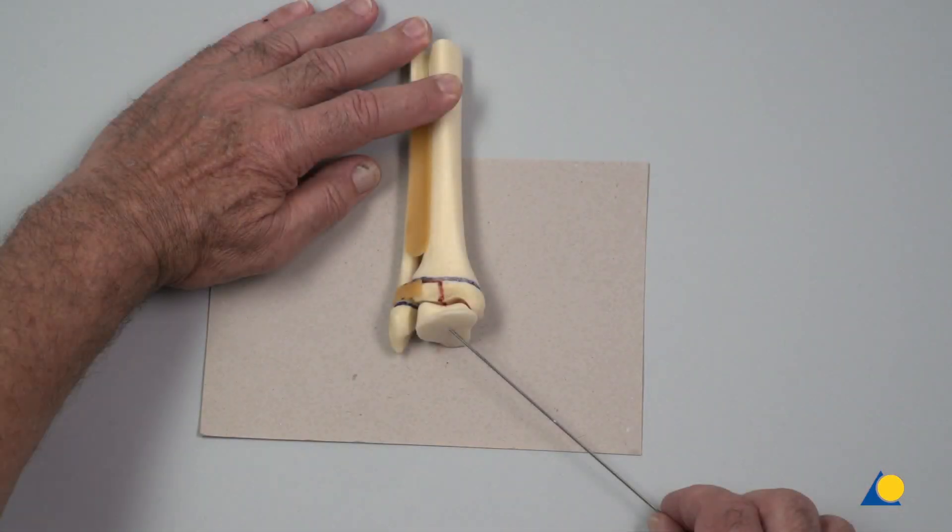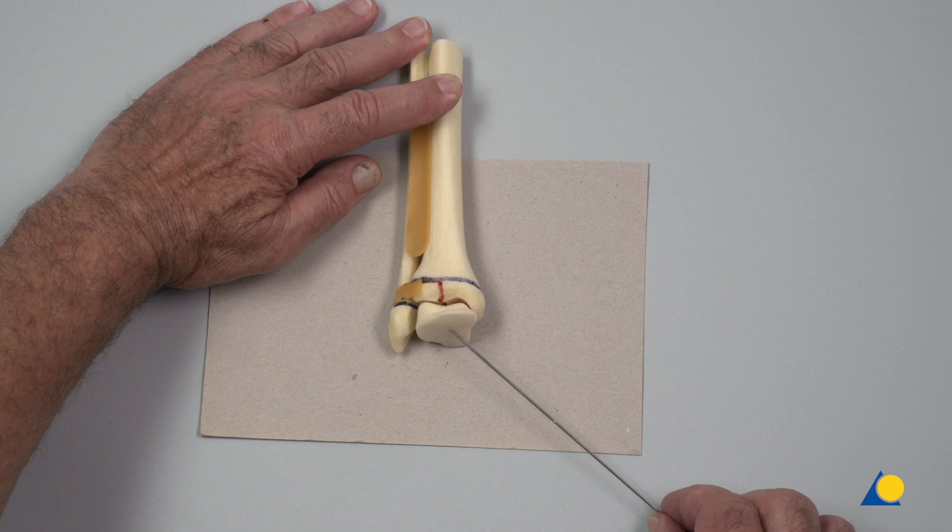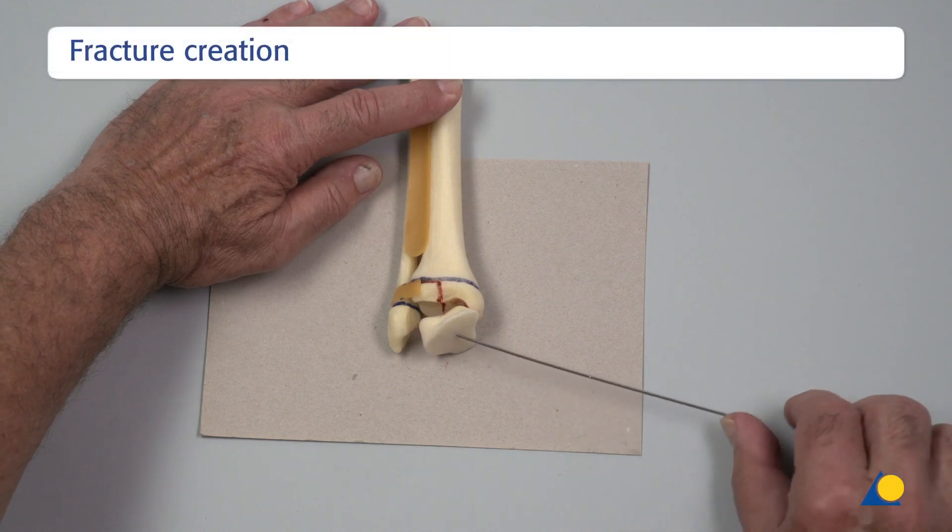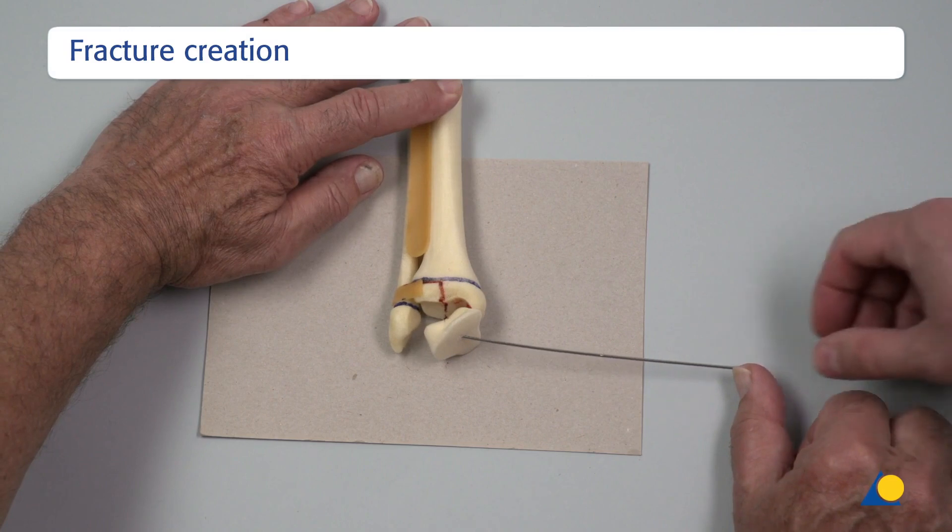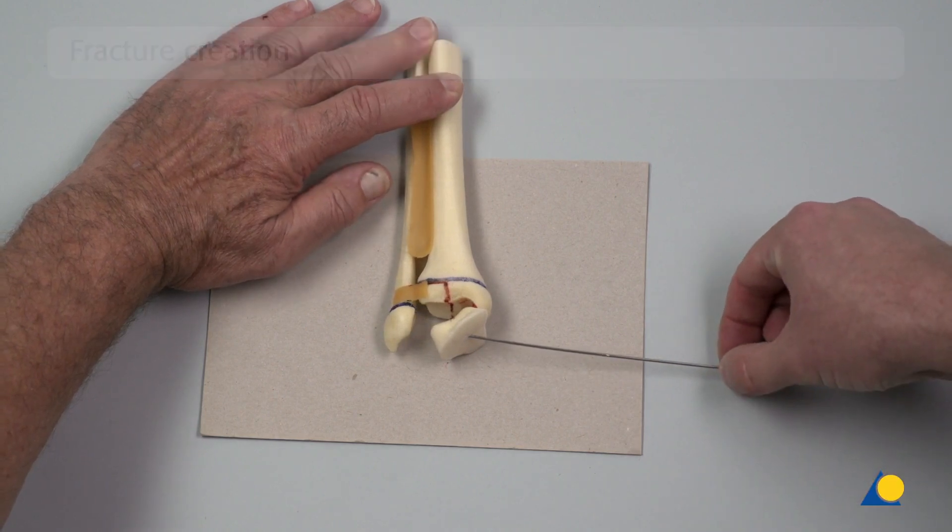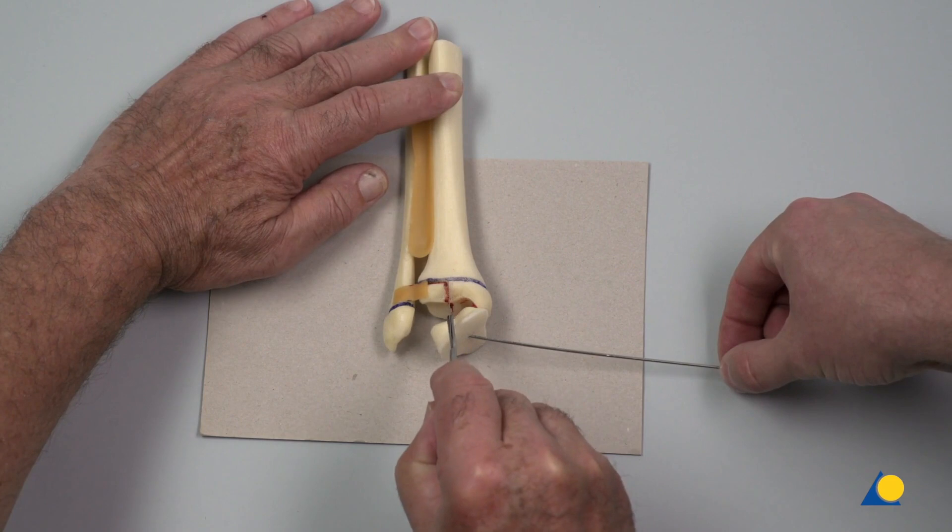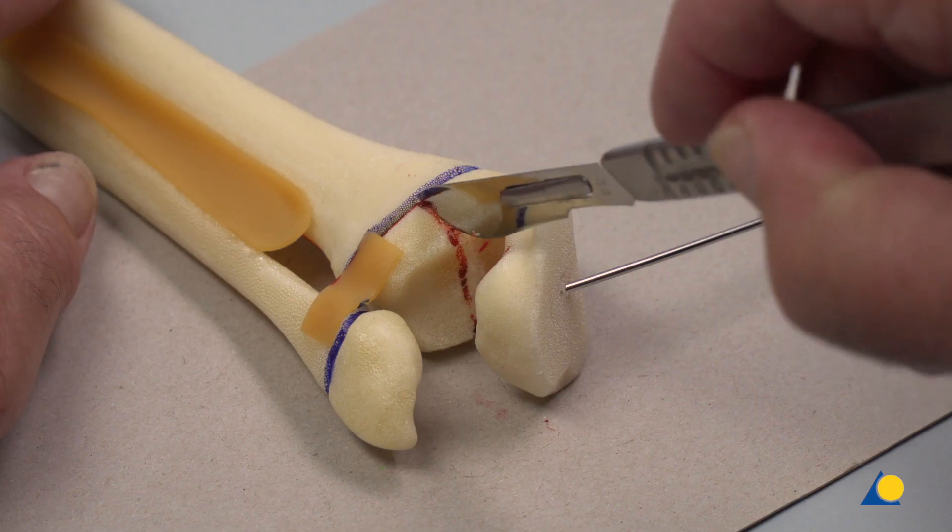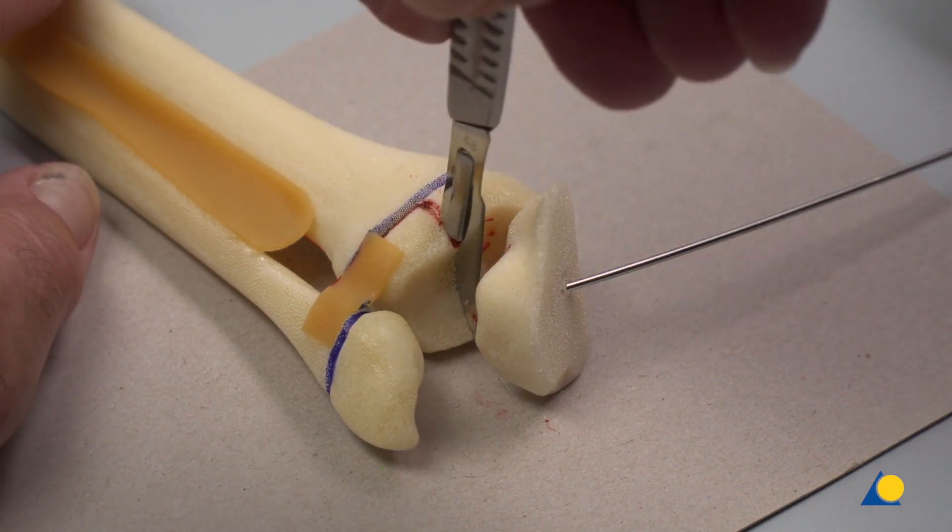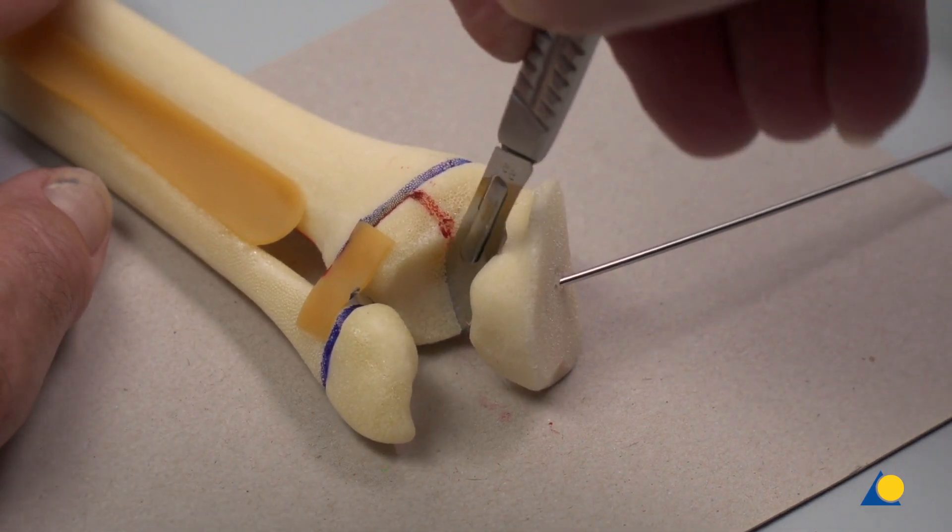A cutting mat has been introduced in order to protect the table surface and preserve the sharpness of the scalpel. With oscillating movements, a sagittal cut is created through the red line, starting at the level of the physis and then down along the level of the joint surface. The talus is pivoted out of the way and the joint cut is completed.